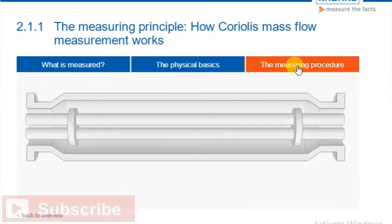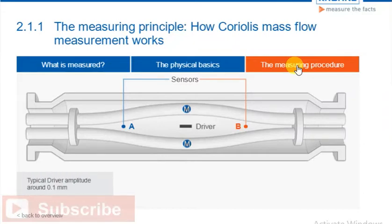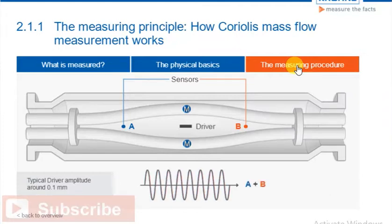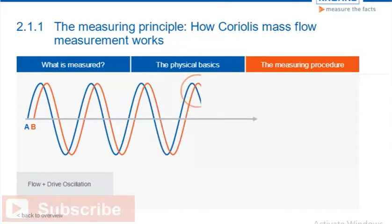In a twin-tube Coriolis meter, the driver resonates both tubes, and the sensors A and B measure deflections between the two tubes. In operation, the driver oscillates the tubes with a very small amplitude of around 0.1 mm. The amplitude is exaggerated in the diagrams to demonstrate the principle. The oscillation provides the angular velocity W required by the Coriolis principle. The driver oscillates the tubes at the resonant frequency of the system. This resonant frequency can be used to measure the process fluid density. When the flow starts, there is a time shift between the measurements at sensors A and B. This effect is caused by the deflection of the tube explained previously. The resulting time shift is proportional to the mass flow rate.